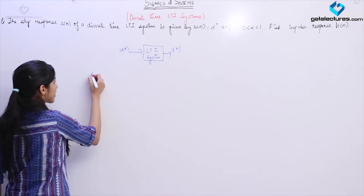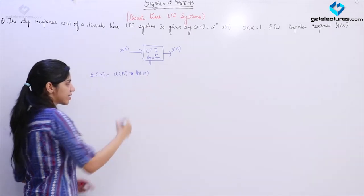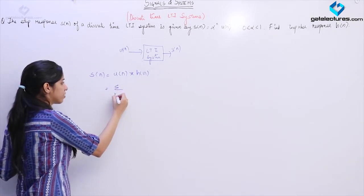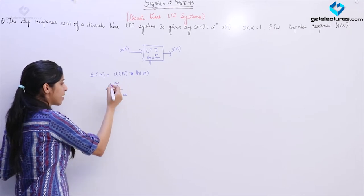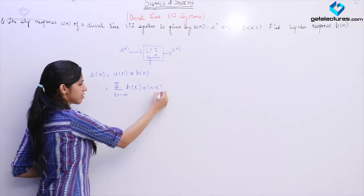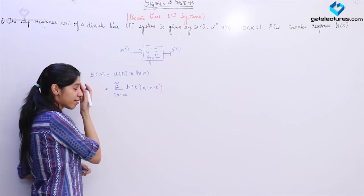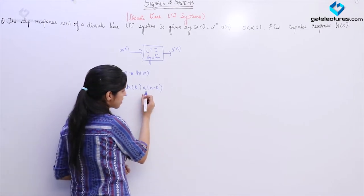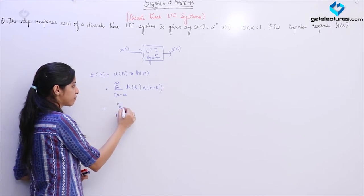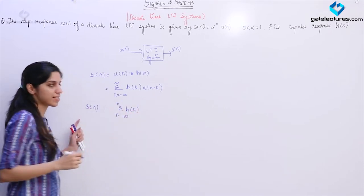So what can I say? S(n) is going to be U(n) convolved with H(n), where H(n) is the impulse response of the system. If I write it in terms of the convolution sum, since convolution is commutative, I can perform the reversal. This step signal U(n minus k) gives samples from k equals minus infinity to n of H(k). So this is what S(n) is going to be.